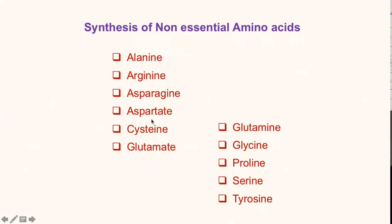The non-essential amino acids listed here are alanine, arginine, aspartate, cysteine, glutamate, glutamine, glycine, proline, serine, and tyrosine. These are the non-essential amino acids and why they are non-essential is because the body can produce these amino acids on its own — these are amino acids we need not supply through diet. However, there are two non-essential amino acids which the body cannot produce on its own unless it has two essential amino acids present: cysteine and tyrosine. Cysteine and tyrosine for their biosynthesis depend on the presence of two essential amino acids, phenylalanine and methionine.